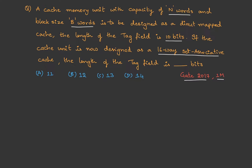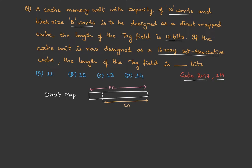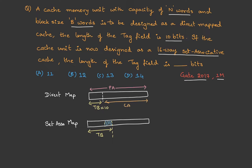For this, let me draw the diagram. In direct mapping, the least significant few bits will be the cache index and the rest will be the tag bits — given as 10 bits. For set associative mapping, we already know the tag bits will be greater than in direct mapping, and that extra few bits are nothing but log k. So tag bits in set associative mapping equals tag bits in direct mapping plus log k, which is 10 plus log 16, so 10 plus 4, which equals 14 bits.